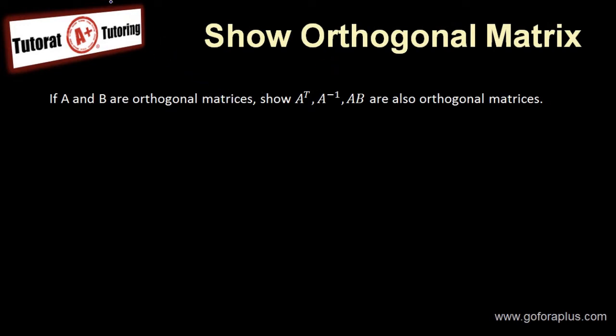Now, orthogonal matrix is what? Basically, A and B are orthogonal matrices, meaning A transpose equals A inverse. Same thing with B. B transpose equals B inverse.